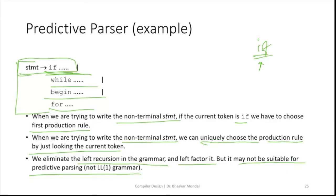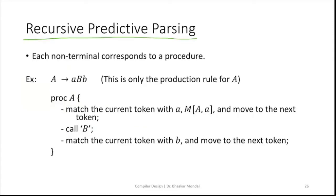Now the next concept is called recursive predictive parsing. In recursive predictive parsing, we assume that each non-terminal is a procedure. So every time we find a non-terminal, we are finding a procedure, which will drive or generate the parse tree for that particular non-terminal symbol. Each non-terminal symbol corresponds to a procedure.